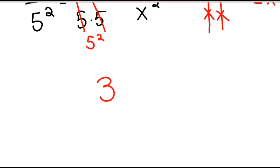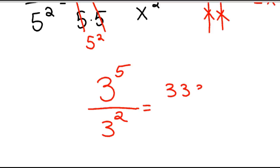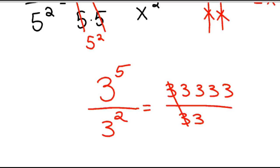Let's say we had 3 to the fifth power over 3 to the second power. Well, 3 to the fifth is 3 times 3 times 3 times 3 times 3. So 3 divided by 3 is 1, 3 divided by 3 is 1, 3 divided by 3 is 1 — so you're left with 3 to the third power.